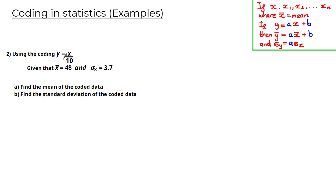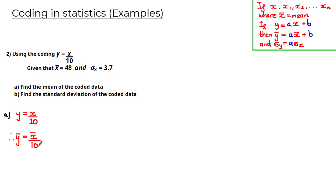Using the coding y = x / 10, given that x̄ = 48 and σx = 3.7, the first part asks us to find the mean of the coded data. Using this coding equation, ȳ = x̄ / 10. Since x̄ = 48, we get ȳ = 48 / 10 = 4.8.